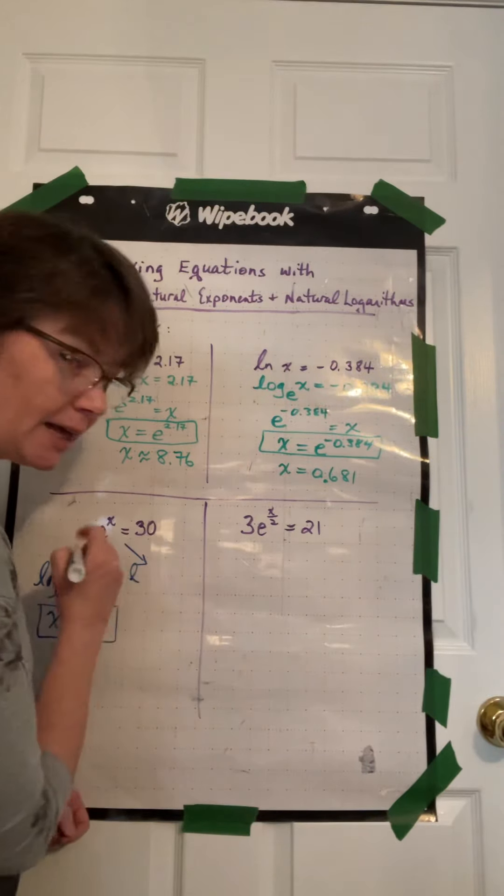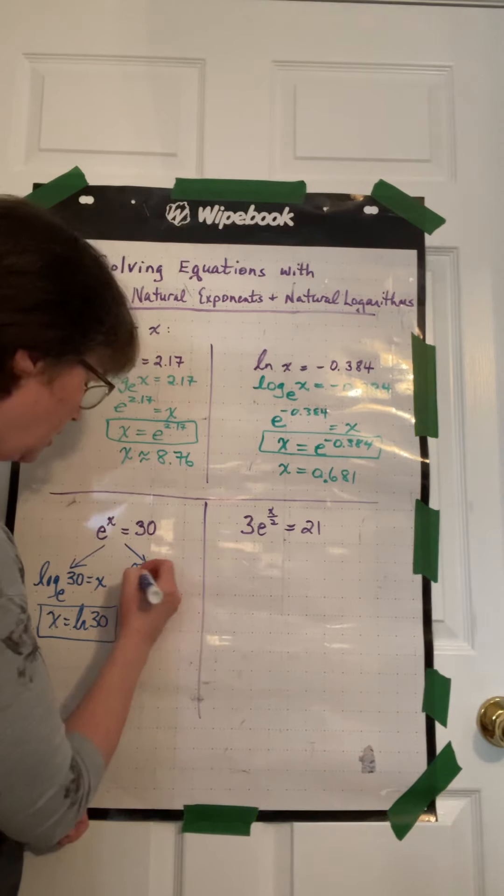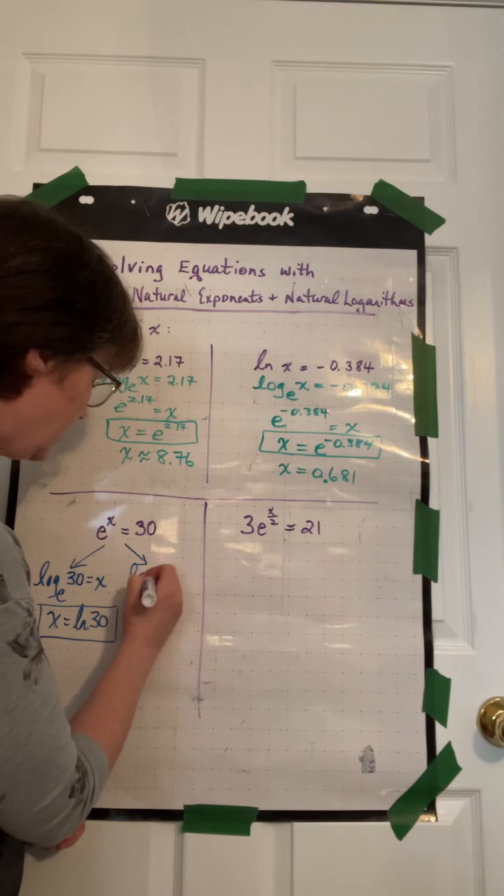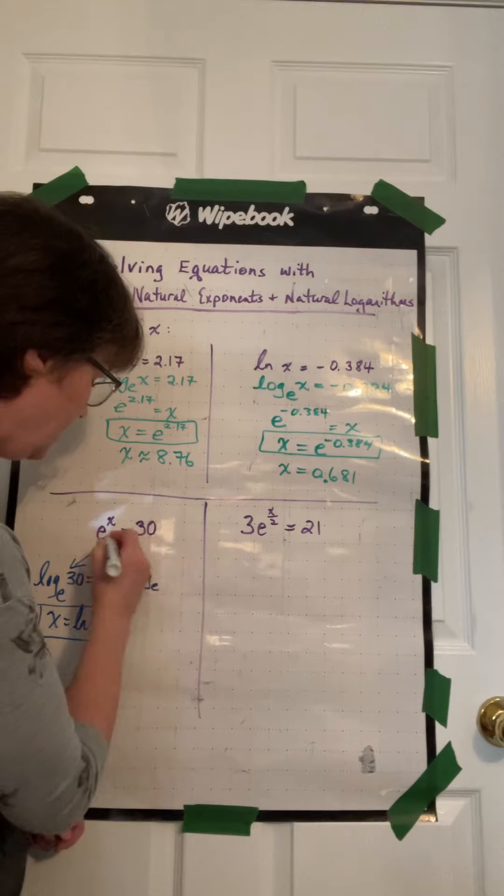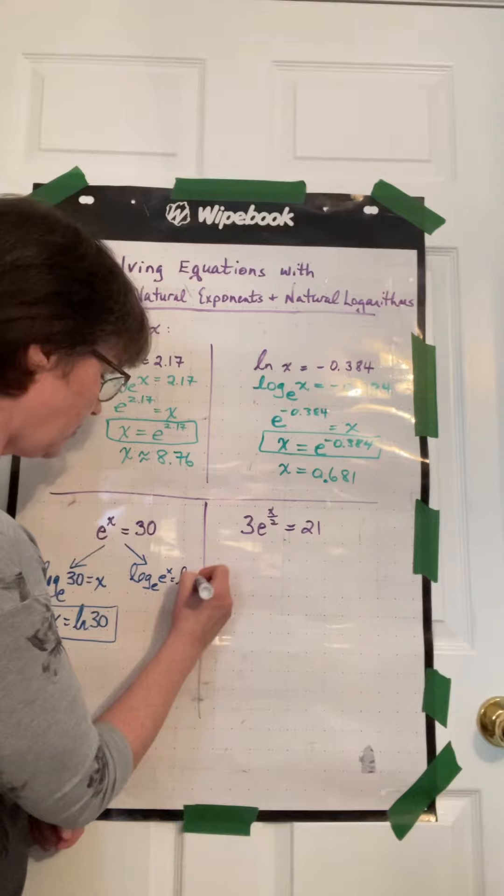So we're going to ln both sides of the equation. So you could go directly to lnning that, but I'm going to write it as log base e of e to the x equals log base e of 30.